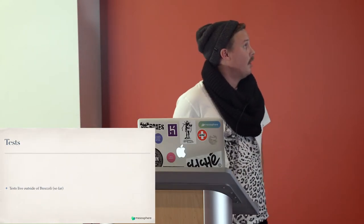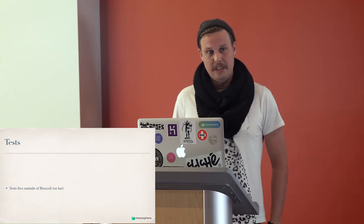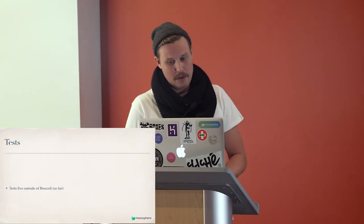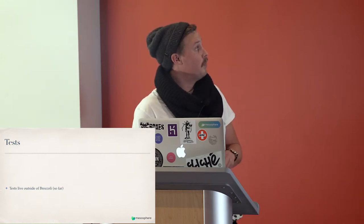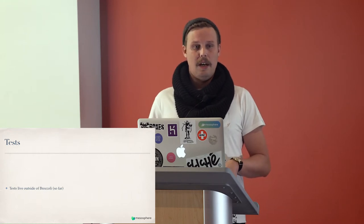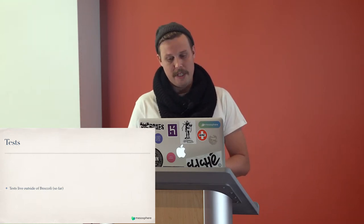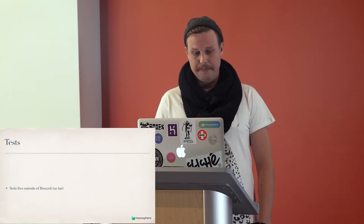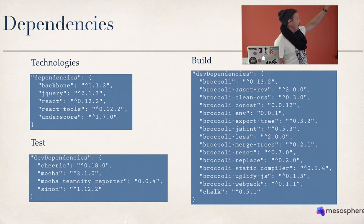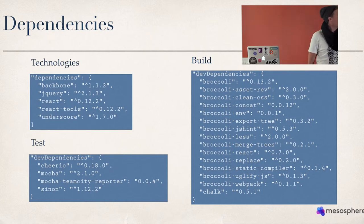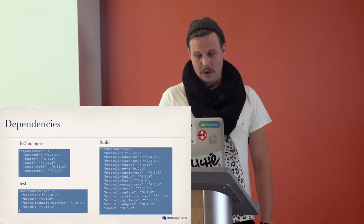Testing in Broccoli is live outside right now. In our repository we used some technologies we like and created a build hook using TeamCity, though I'm not going to go too deep into it because it's not a core part of Broccoli. They're working on getting a build hook for testing, so hopefully that's coming. The dependencies are pretty straightforward — you have Backbone, jQuery, React, Underscore, the test dependencies, and the rest is just Broccoli.